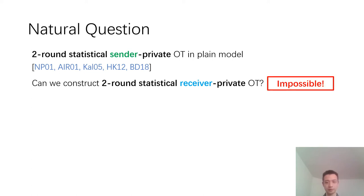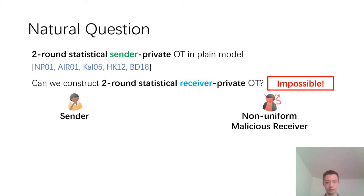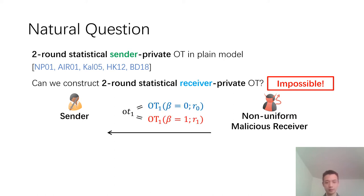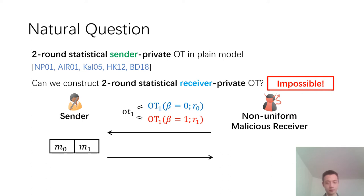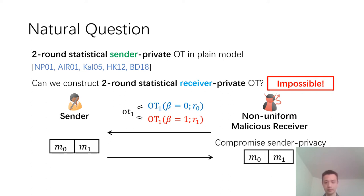It turns out that this is impossible. Consider a scenario where there is a sender and a non-uniform malicious receiver. Since the receiver side is statistically hidden, the malicious receiver can find a first-round message OT₁ such that it equals both a first-round message for β=0 and a first-round message for β=1. Then the sender completes the protocol, and the malicious receiver can get both messages, compromising the sender's privacy.